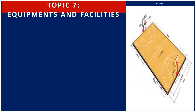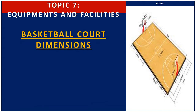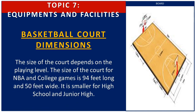Let us now proceed to topic 7 — equipment and facilities used in basketball. We have the basketball court dimensions. The size of the court depends on the playing level. The court for NBA and college games is 94 feet long and 50 feet wide, while it is smaller for high school and junior high.